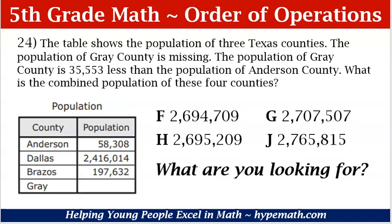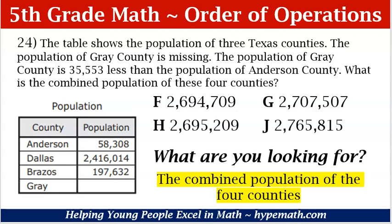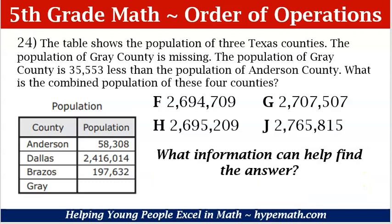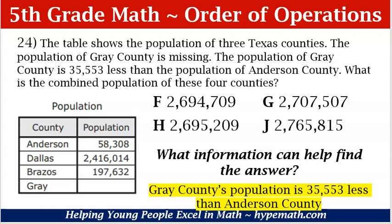What are we looking for? Very important question, right? We are looking for the combined population of the 4 counties. What information can help us find the answer? The information that can help us, along with all of the total amounts for each county's population, is that Gray County's population is 35,553 less than Anderson County. We need to know that because in order to calculate all four counties, we need to know what the total is for Gray County.